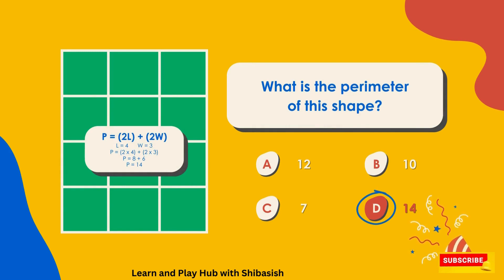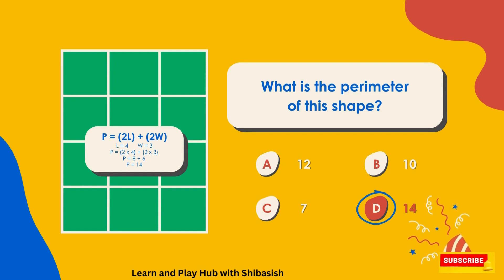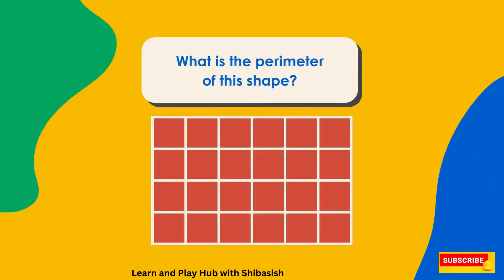P equals 2L plus 2W. L equals 4, W equals 3. P equals 2 times 4, plus 2 times 3. P equals 8 plus 6. P equals 14.